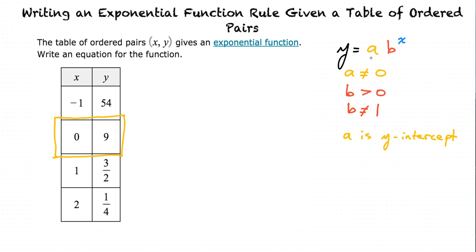Because we know that, we can use another point in the table to solve for b. Which point would you like to use? Let's try 1 and 3 halves. Then plug 1 in for x and 3 halves in for y, and we will solve for b.